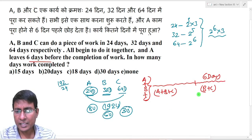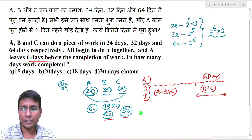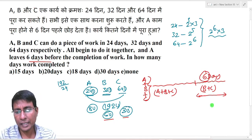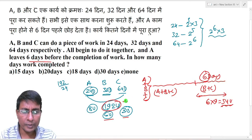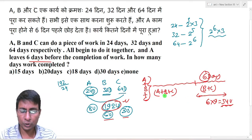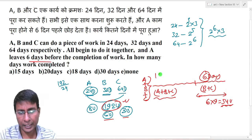So in the last 6 days, the total work done: B and C's combined efficiency is 6 + 3 = 9 units. So in 6 days, they complete 6 × 9 = 54 units. Out of the total 192 units, 54 units were done by B and C at the end.